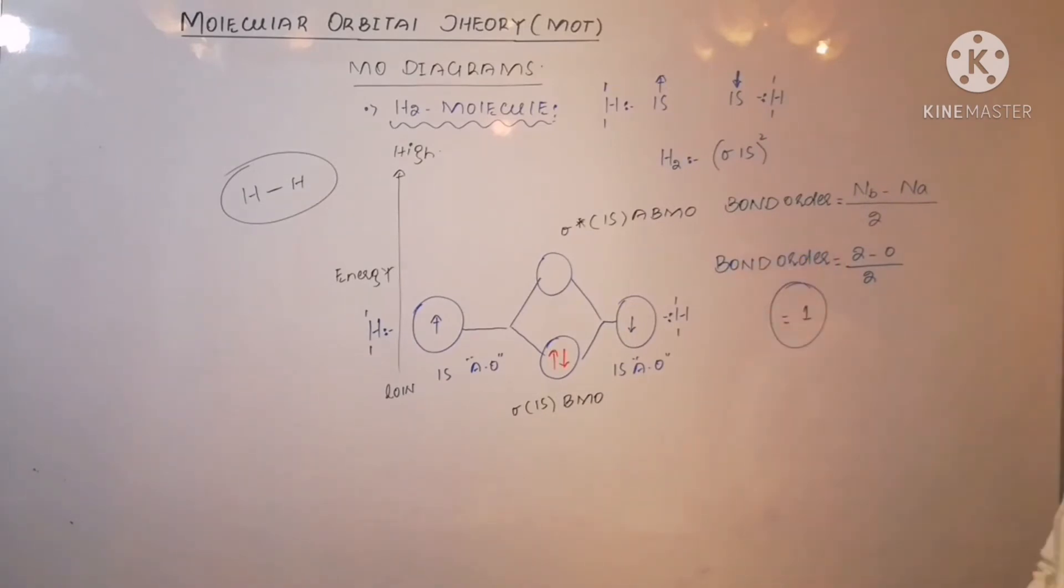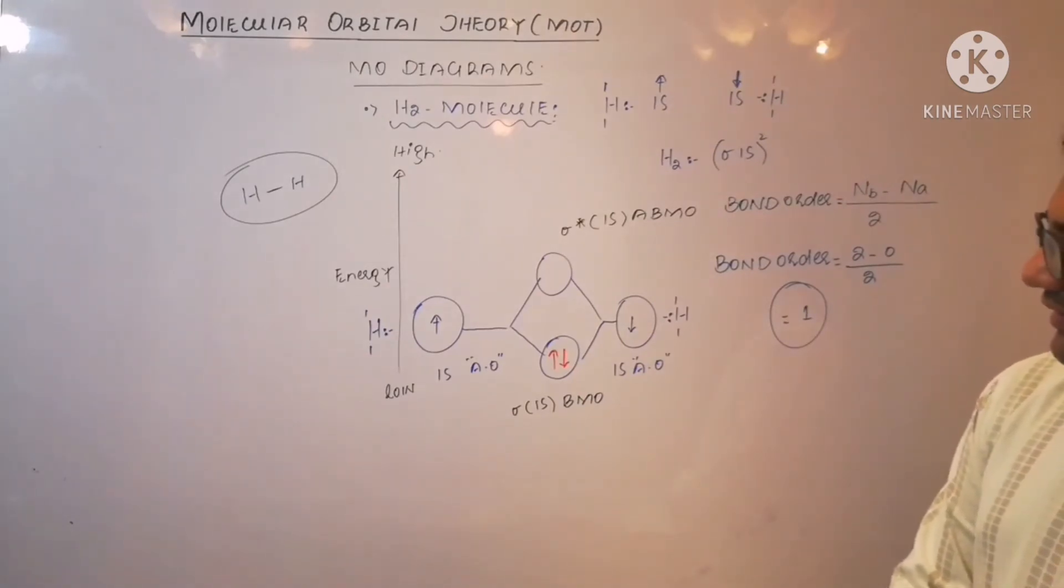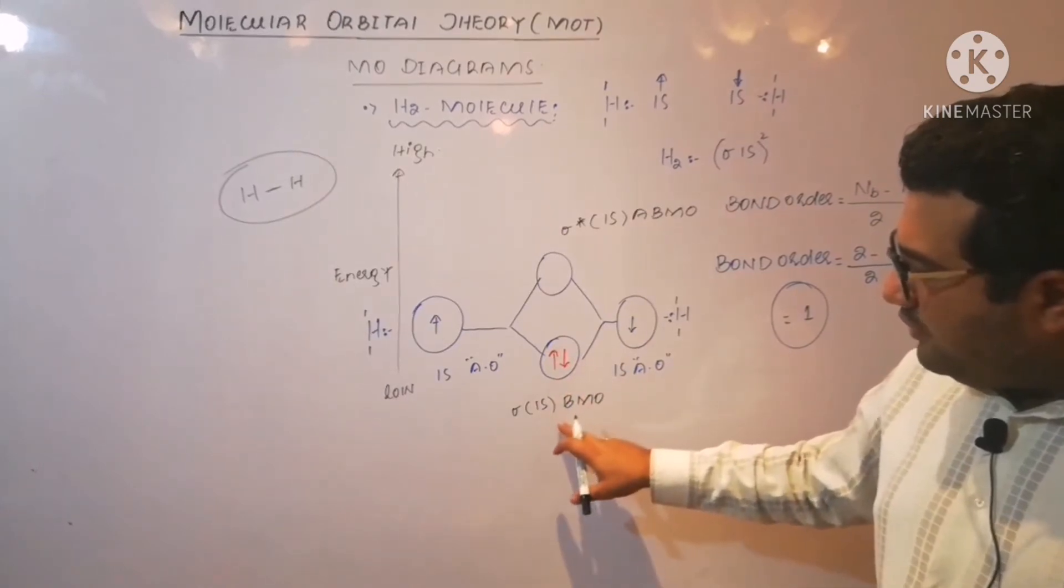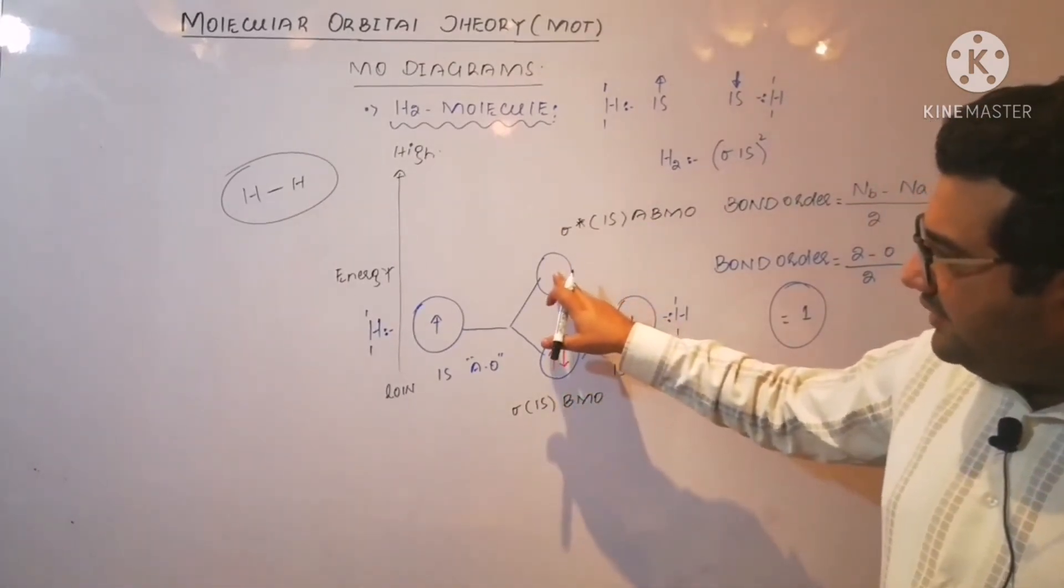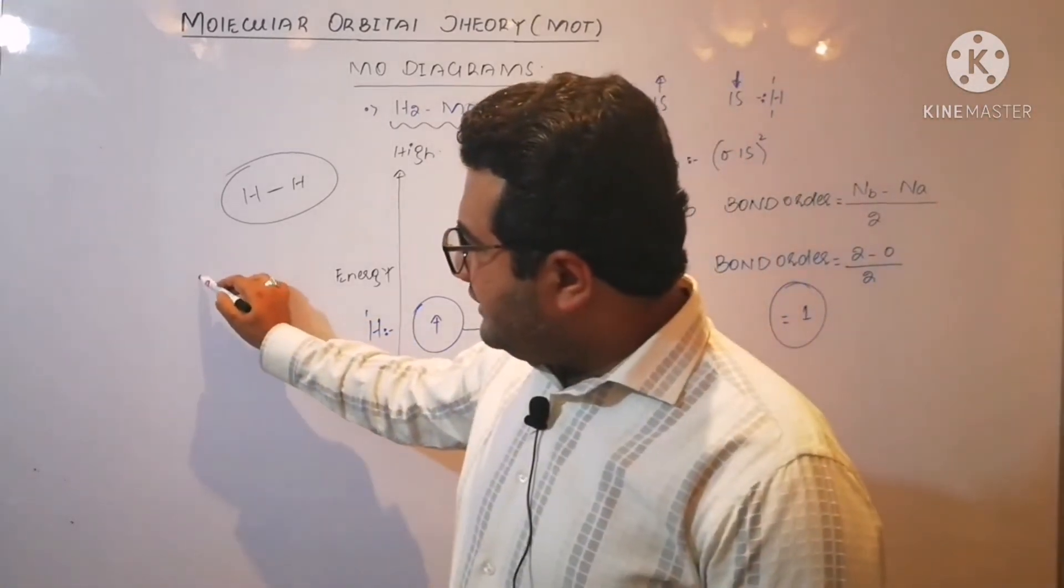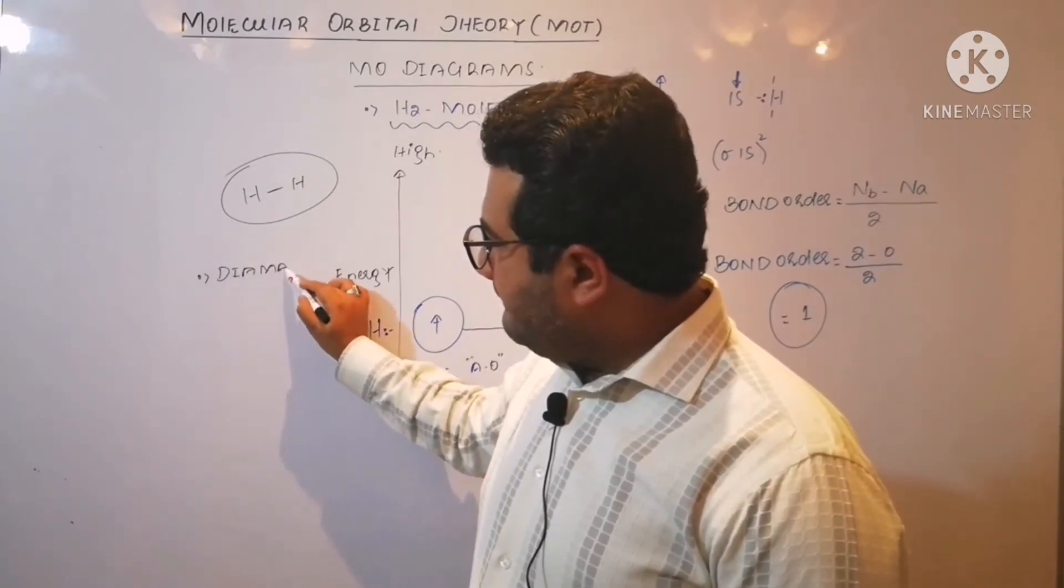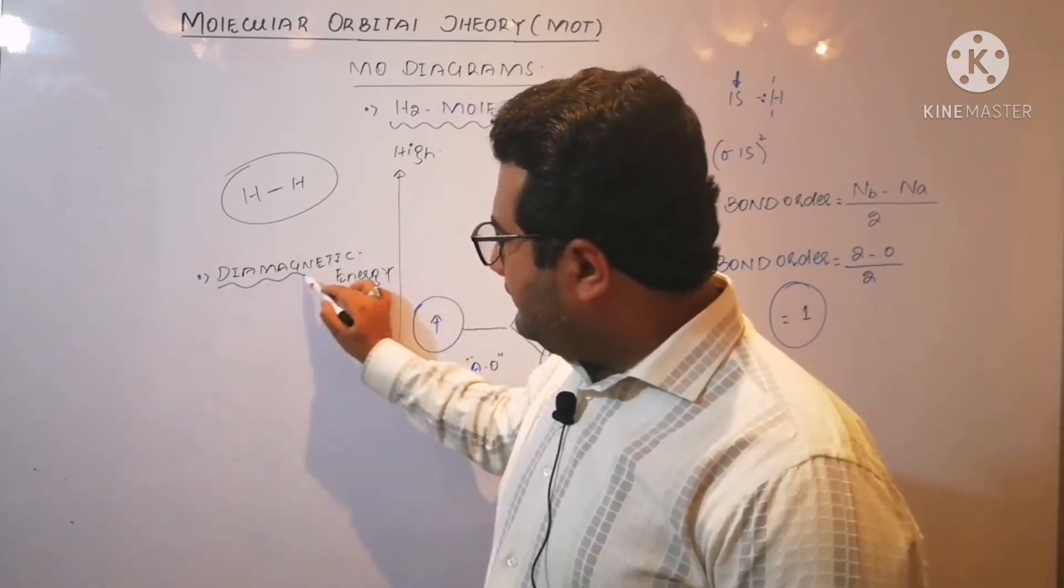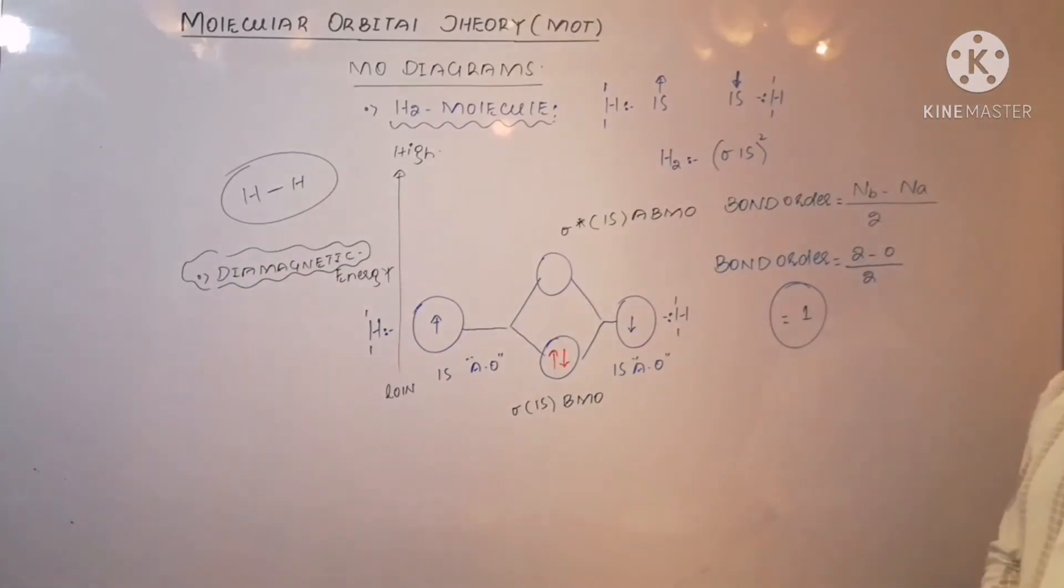Now let us discuss whether this hydrogen is paramagnetic or diamagnetic. You can see that this bonding molecular orbital is doubly filled. There is no electron here, so all the electrons in H2 molecule will be paired. And when all the electrons are paired, magnet repels such species. So hydrogen is diamagnetic.